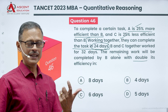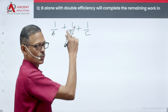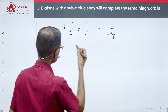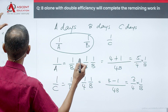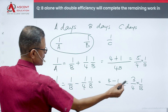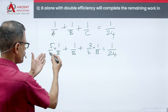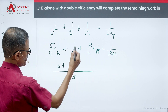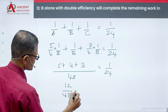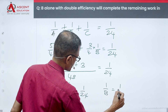When A, B, and C work together they finish the task in 24 days, so in one day: 1/A + 1/B + 1/C = 1/24. Substituting: (5/4)·(1/B) + 1/B + (3/4)·(1/B) = 1/24. Taking 4B as the common denominator gives (5+4+3)/4B = 12/4B = 1/24. Solving, 1/B = 1/72.